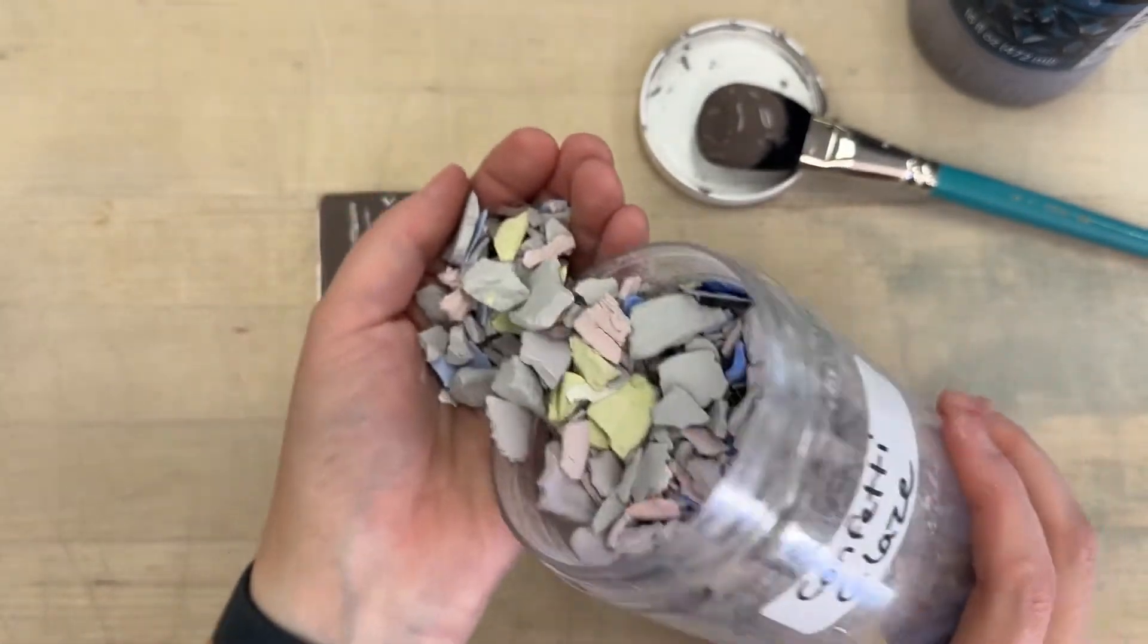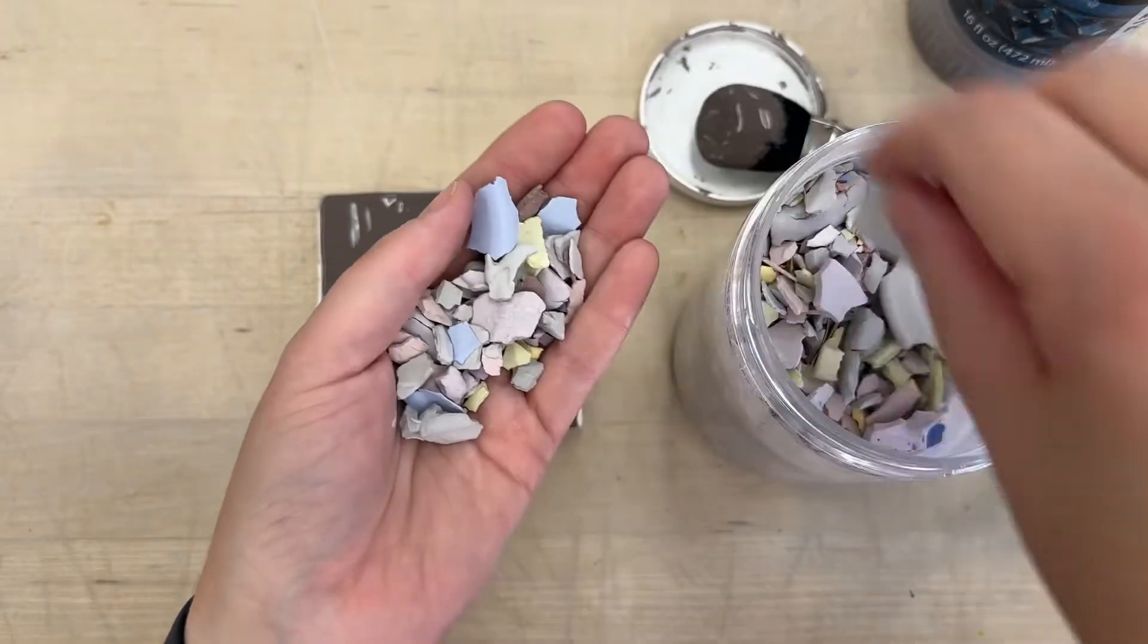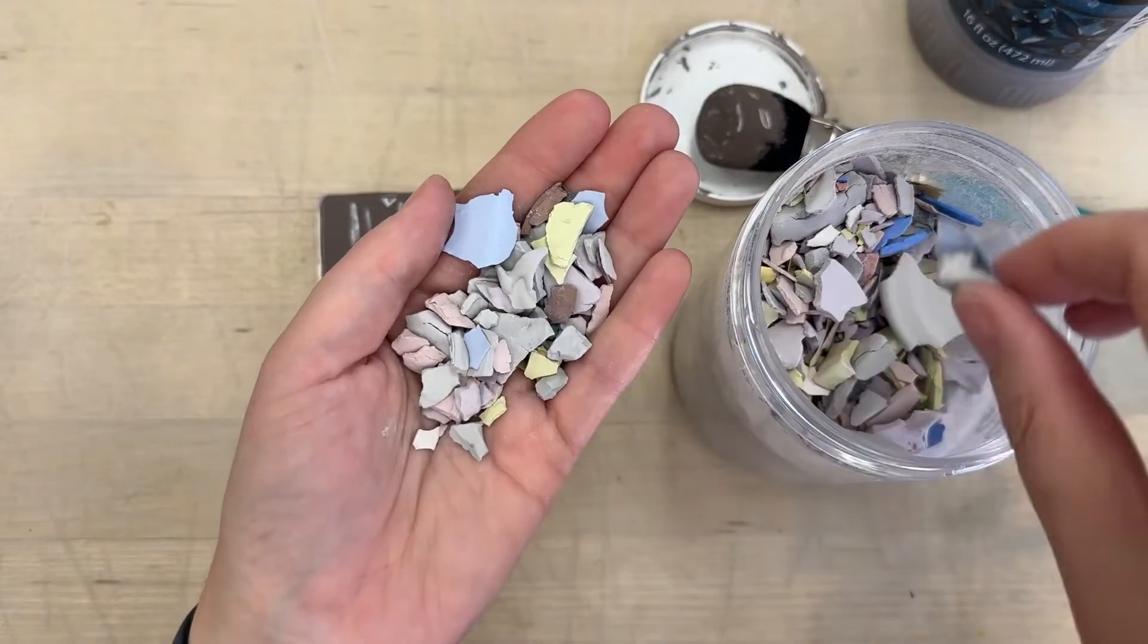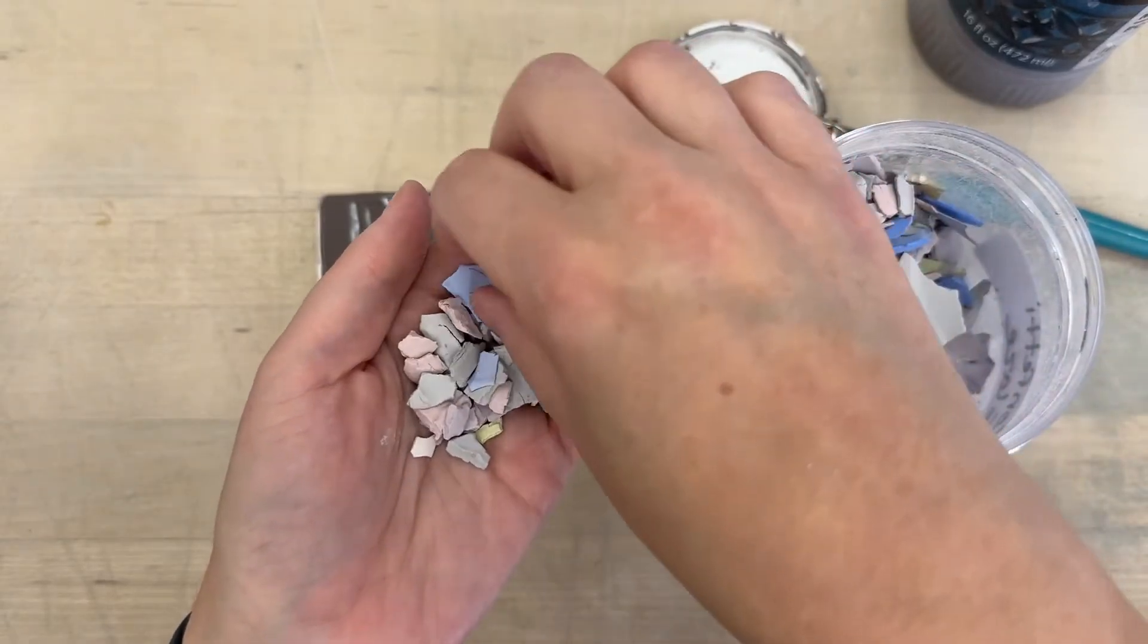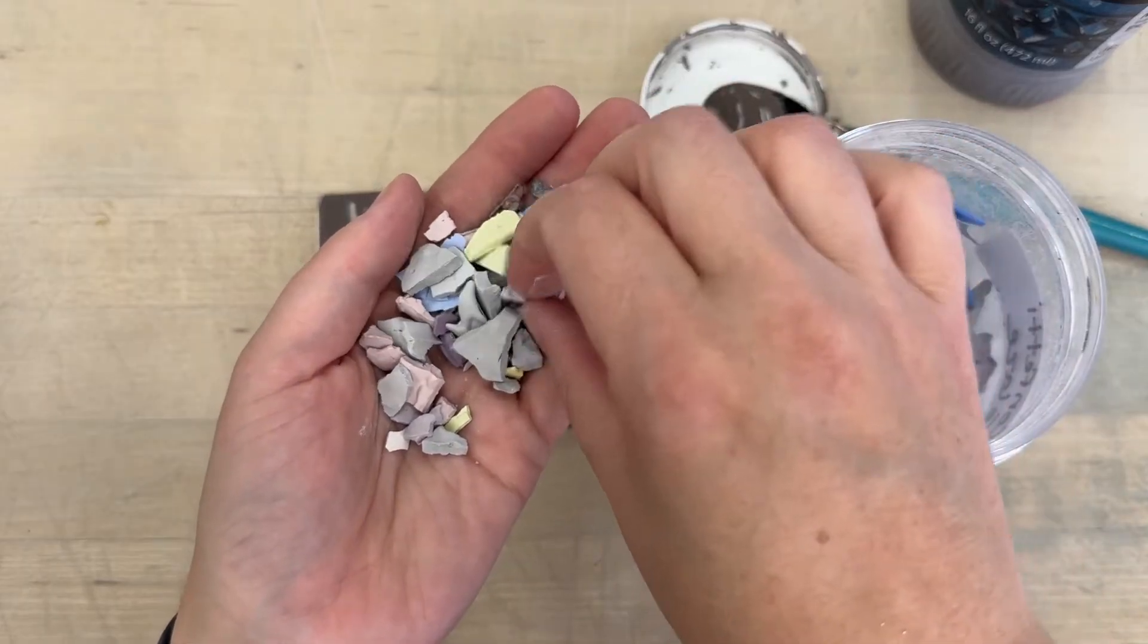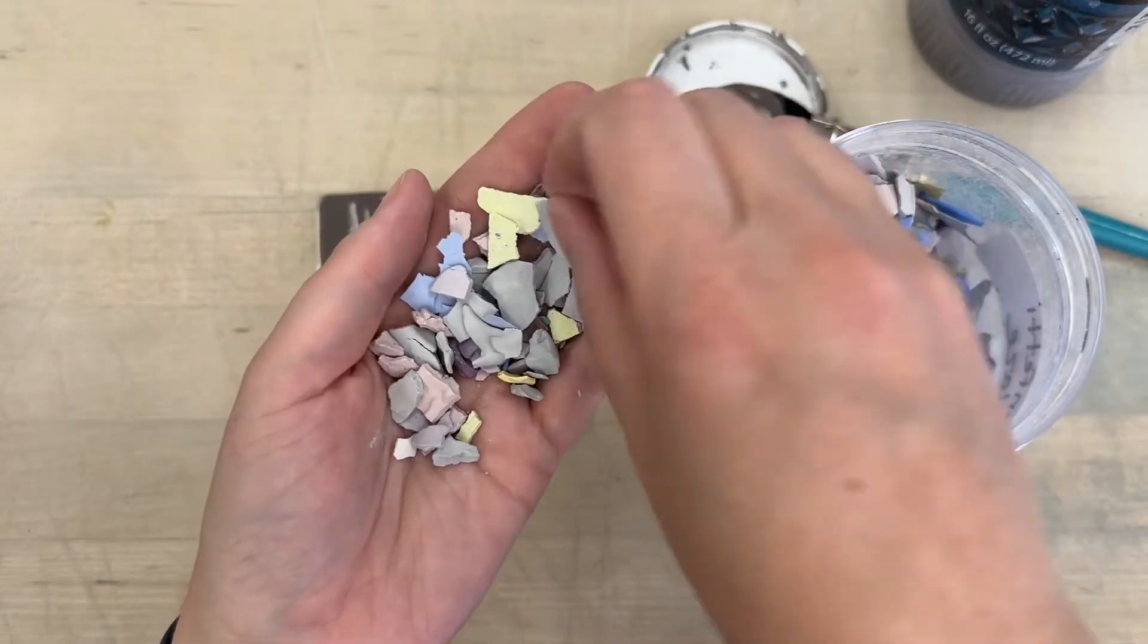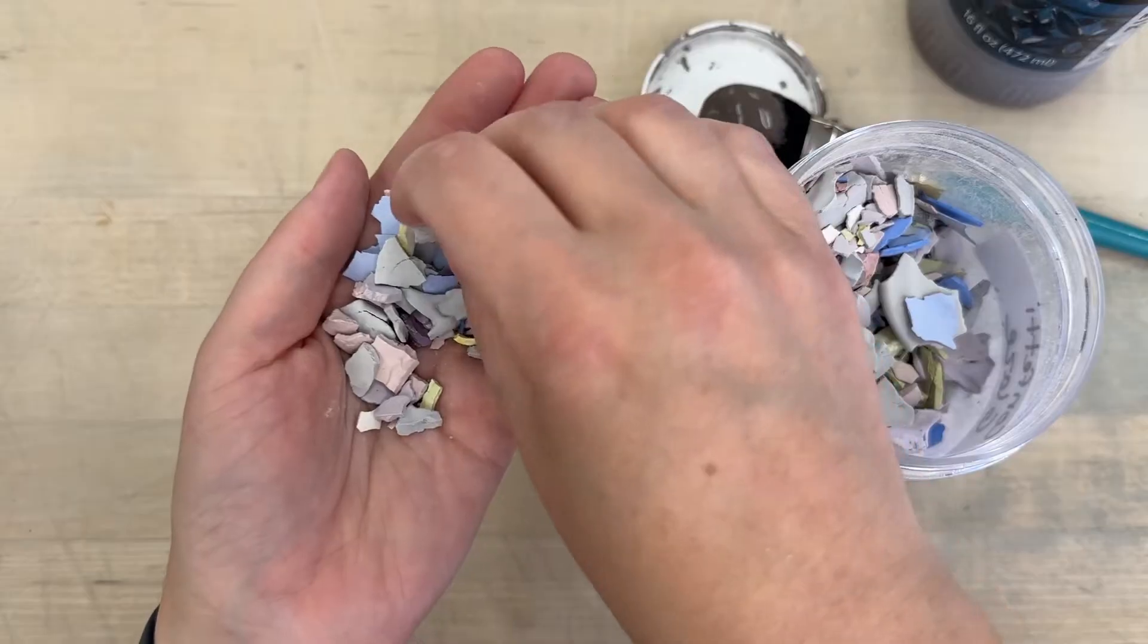What I tend to do is I'll just dump some in my hand and I will pick out any really big chunks that are not easy to make into smaller chunks. This one's still a little bit big. There's a couple that are a little bit big in here, but it'll be okay.